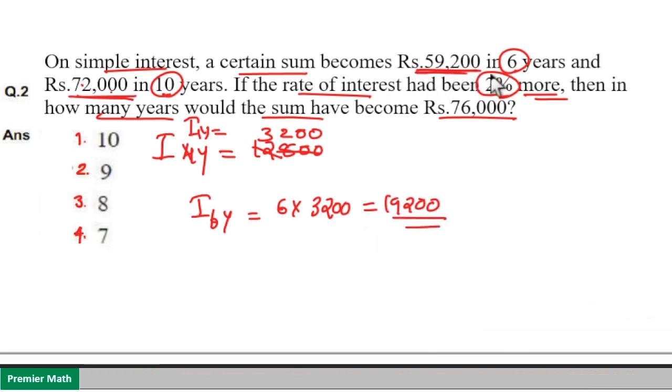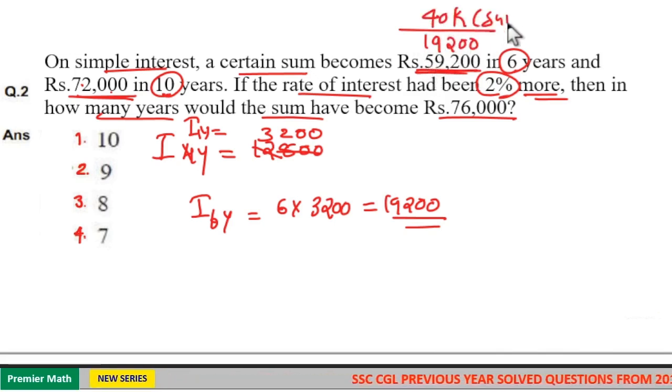Now the sum in 6 years is Rs. 59,200. Subtract the interest received in 6 years from it, and you get the initial sum, which equals Rs. 40,000.